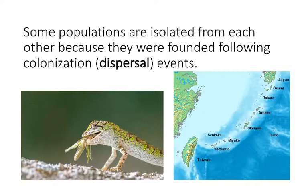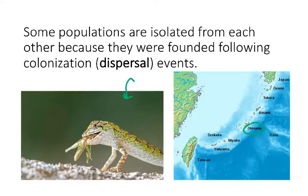Some populations are isolated from each other because they were found following colonization or really rare long-distance dispersal events. This often happens when organisms are colonizing oceanic islands. On the right is a picture of the Ryuku Archipelago in Asia — my family is actually from Okinawa. In this system, they've looked at colonization across different islands for the Okinawan tree lizard, shown here having a snack. Phylogeography studies suggest this species started in Taiwan and then through a series of colonization events, spread and dispersed northward through the archipelago.